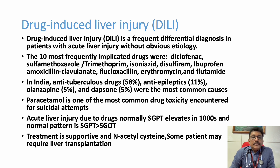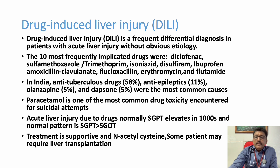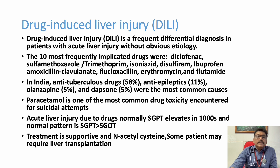In drug-induced hepatitis, a classical finding is that SGPT is elevated more than SGOT, whereas in alcoholic hepatitis SGOT is elevated more than SGPT. Drug-induced hepatitis like paracetamol is routinely treated with N-acetylcysteine, which can be used in other types of hepatitis as well. Some patients may require liver transplantation.